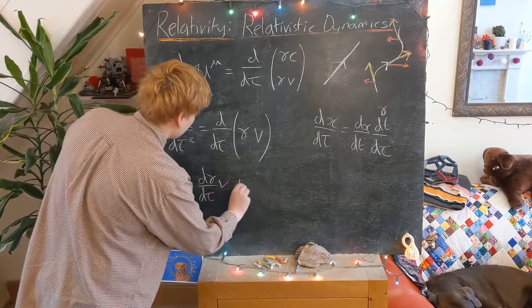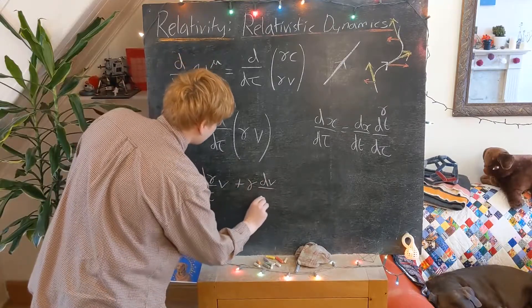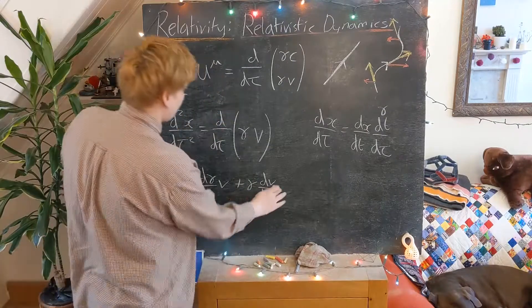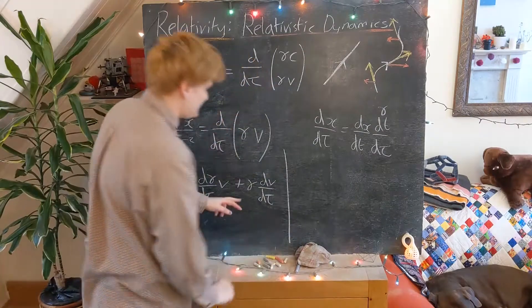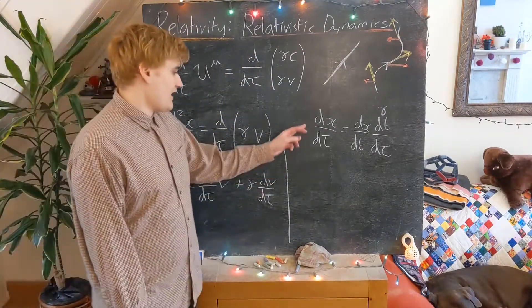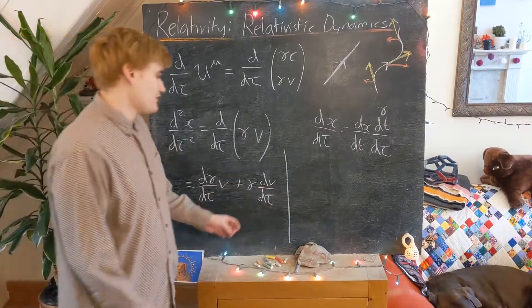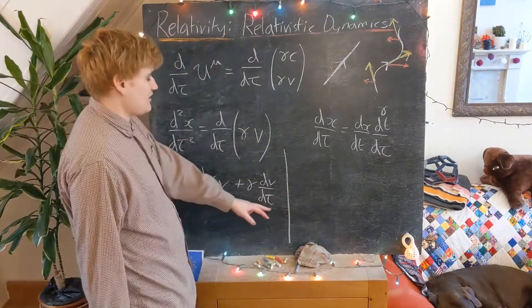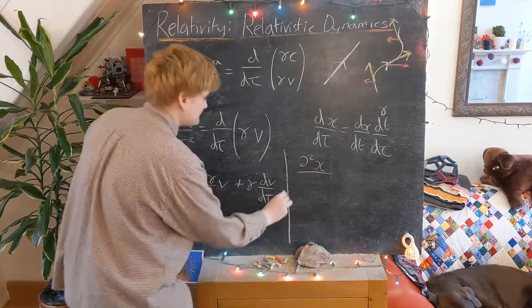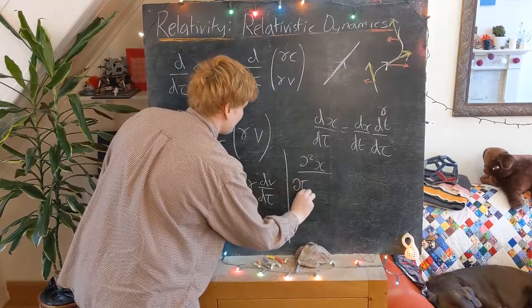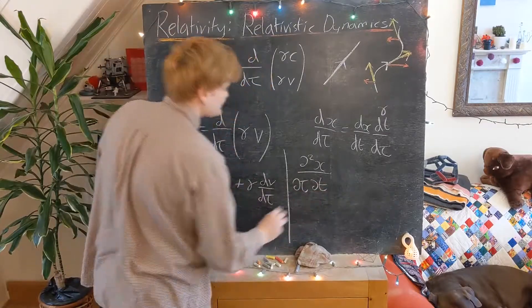But then this thing is then just d gamma, and then the derivative of dv by d tau. So let's just quickly work out what this dv by d tau is going to be. Again, from here, remembering that v is dx by dt. So we can realize that this is now going to become now a mixed partial derivative of x. We have our tau derivative, and then we have it being derived with respect to t.